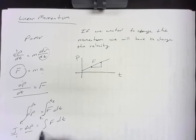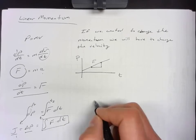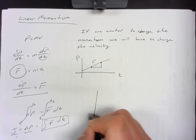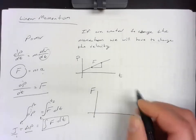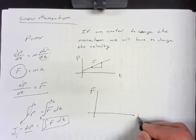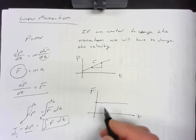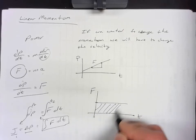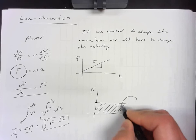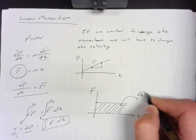And what this tells us, that if we have a graph that is force as a function of time, regardless of what the shape is, so if there's a constant force being applied, the area underneath that graph is going to be the change in momentum.